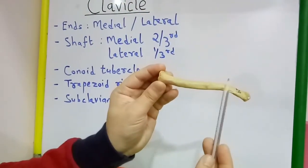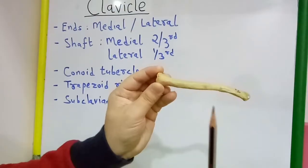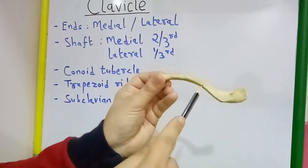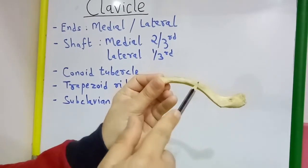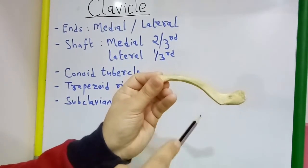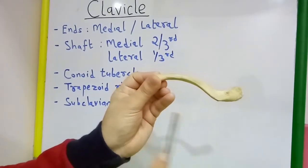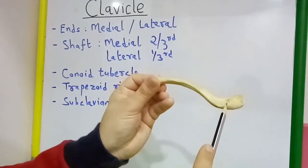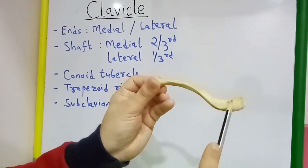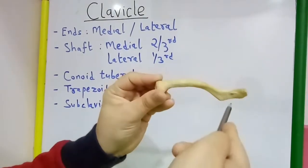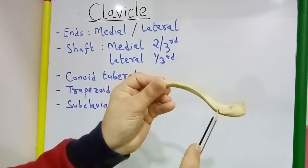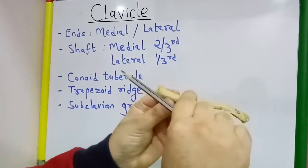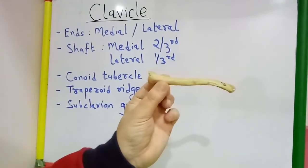The lateral one-third of the shaft is concave forward and convex backward, whereas the subclavian groove is present on the inferior aspect of the middle part of the shaft, and along the lateral one-third of the shaft inferiorly there is a conoid tubercle and trapezoid ridge. So this clavicle is the left clavicle.